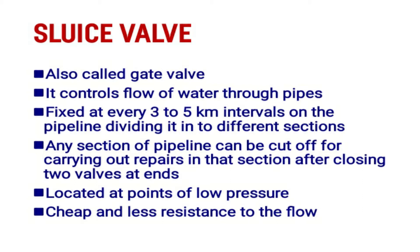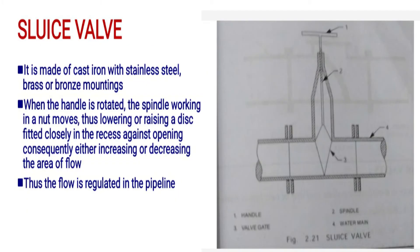Any section of pipeline can be cut off for carrying out repairs in that section after closing the two valves at the ends. These valves are located at low pressure points. They are cheap and provide less resistance to flow. Sluice valves are made of cast iron with stainless steel, brass, or bronze mountings.